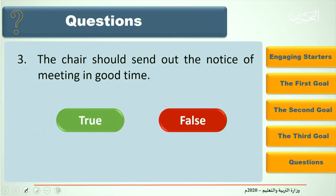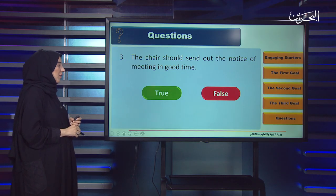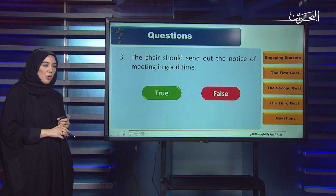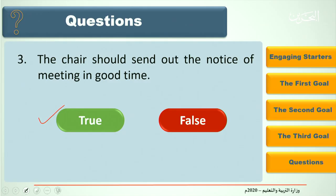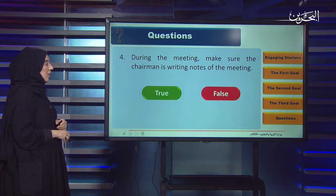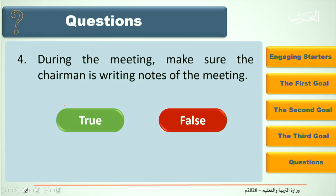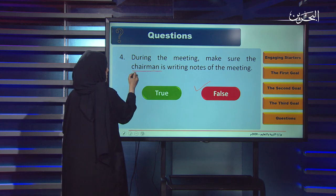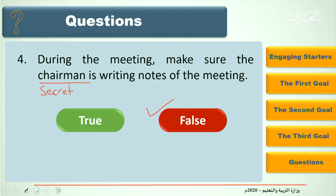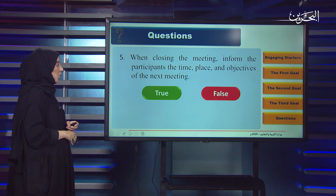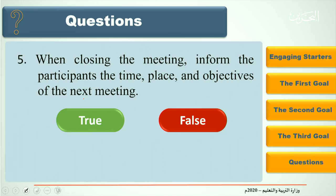Question three: The chair should send out the notice of the meeting in good time. True or false? The answer is True. Question four: During the meeting, make sure the chairman is writing notes of the meeting. True or false? The answer is False — it must be the secretary, not the chairman. Question five: When closing the meeting, inform the participants of the time, place, and objectives of the next meeting. True or false? The answer is True.